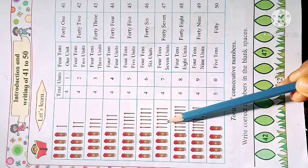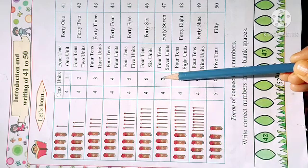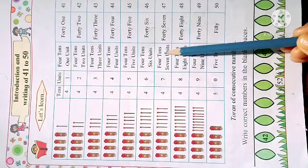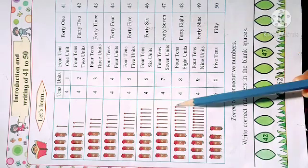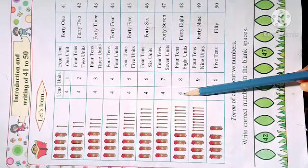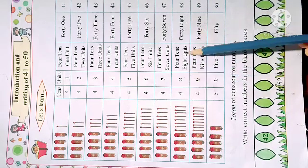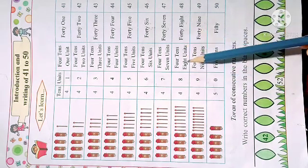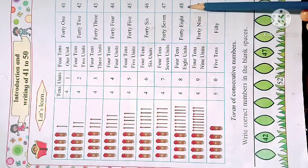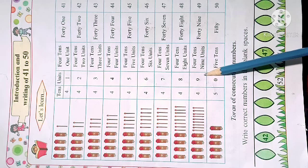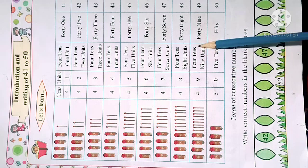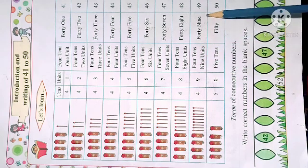Four tens and seven units: forty seven. Four tens, eight units: forty eight. Four tens and nine units: forty nine.